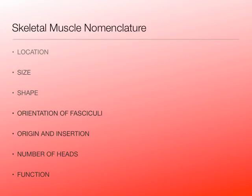A good exercise is to take your muscle list, go through all the names, look at each word, and determine which of these seven categories that word falls into. Exam questions will likely ask: which of the following muscles is named for its shape? Which is named for its origin? Which is named for its function? The examples used will come from the muscles on your list.